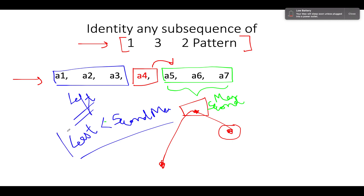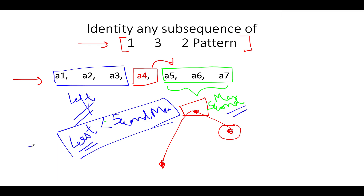If you are able to identify this equation — that the least value towards the left of a4 is less than the second max towards the right of a4 — then you have identified the 132 pattern and return true. However, if the least value towards the left of a4 is greater than the second max, then you return false because the graphical structure will not be formed.